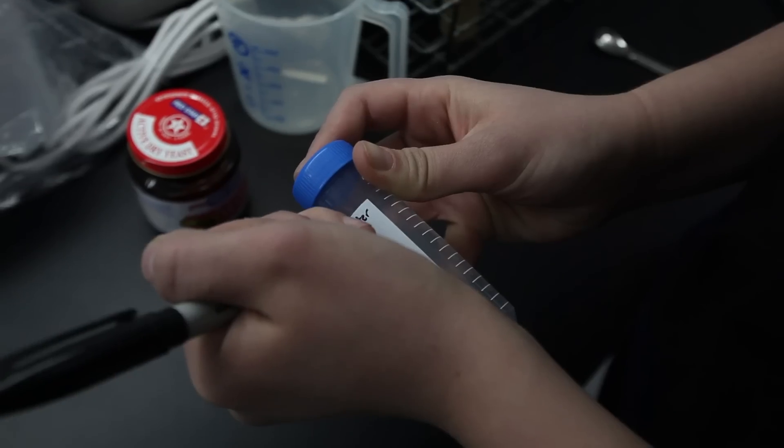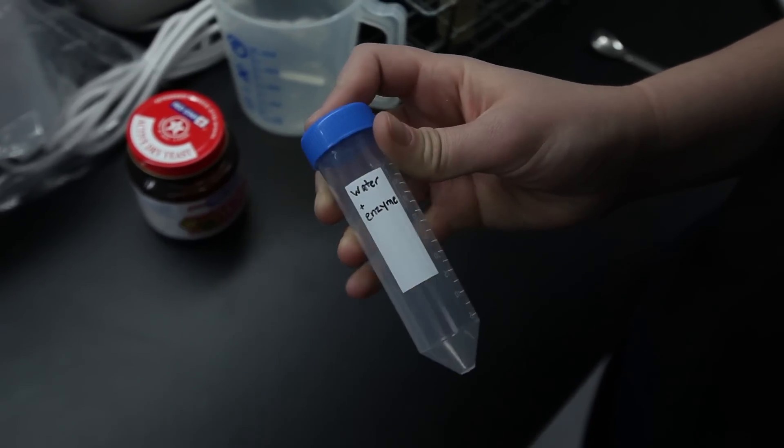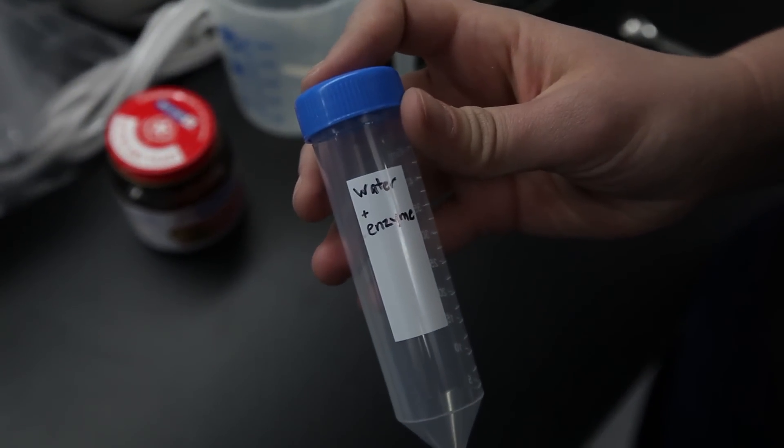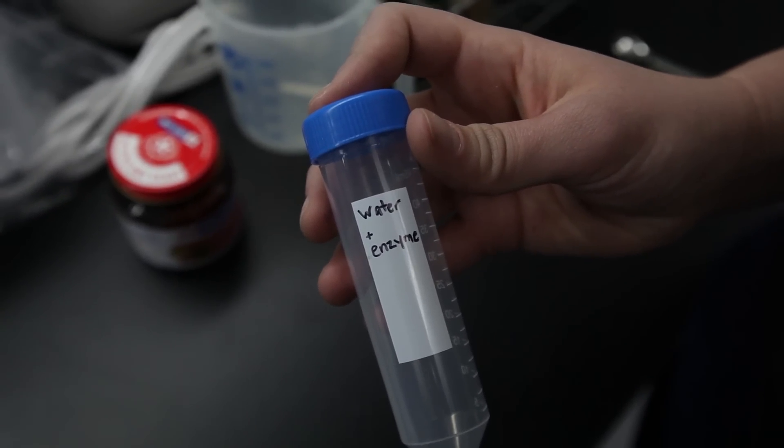It is good scientific practice to create a control to isolate background glucose and ethanol levels. Controls can include biomass samples without enzyme, water with enzyme, or just water.